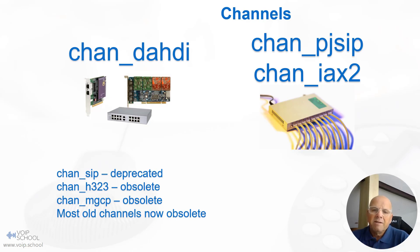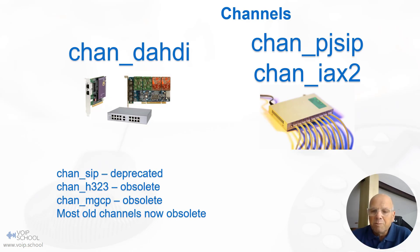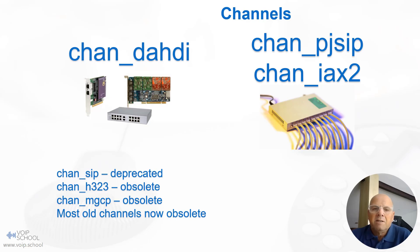Right now we use chan_pjsip. In the beginning we had chan_sip, but in Asterisk 22 chan_sip isn't even included — not even as a deprecated version, it was removed entirely. Chan_pjsip is much better: the performance is better and there are more resources.